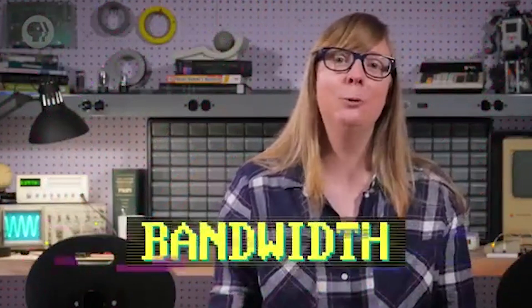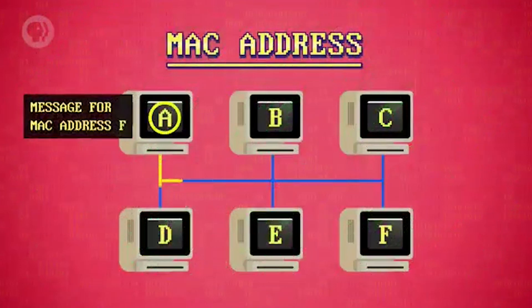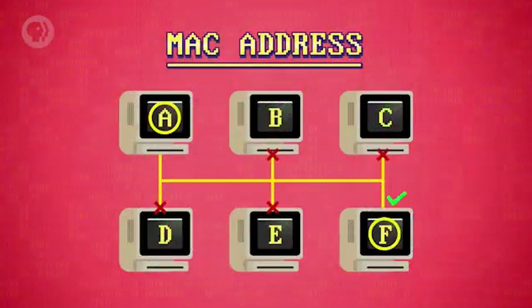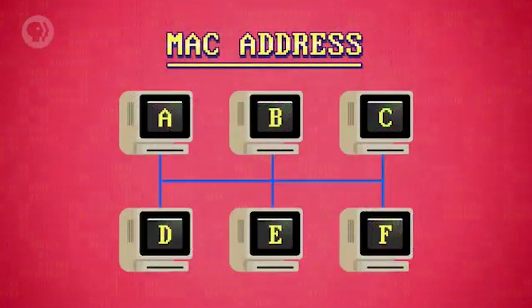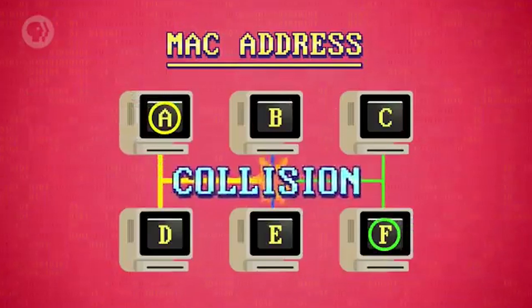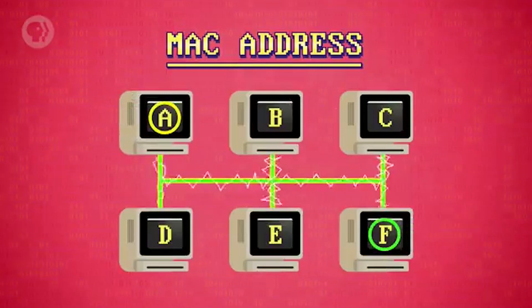Many computers can simultaneously sense the carrier — hence 'sense' and 'multiple access' — and the rate at which the carrier can transmit data is called its bandwidth. Unfortunately, using a shared carrier has one big drawback. When network traffic is light, computers can simply wait for silence on the carrier and then transmit. But as network traffic increases, the probability that two computers will attempt to write data at the same time also increases. This is called a collision, and the data gets all garbled up, like two people trying to talk on the phone at the same time.